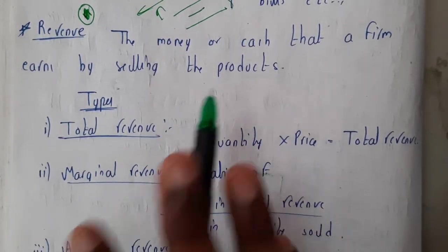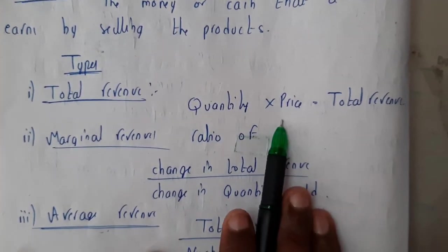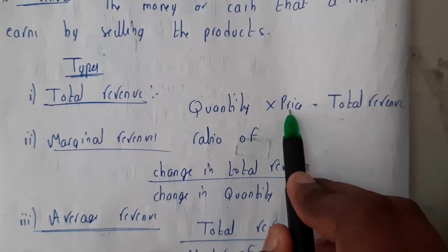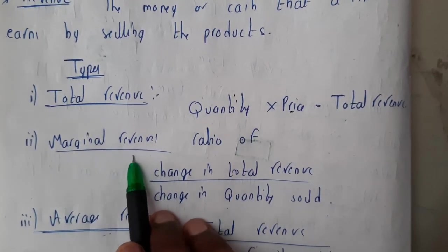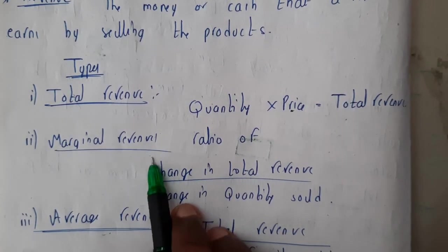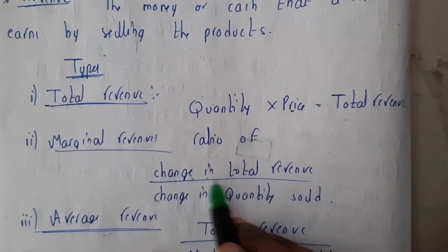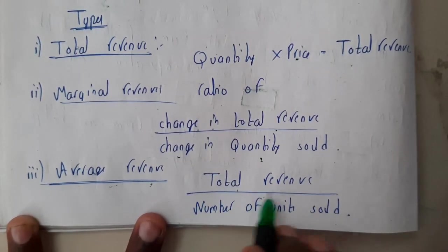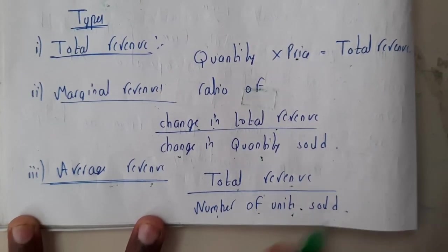Revenue is also of three types, just like cost. Total Revenue is quantity multiplied by price — for example, 50,000 units at 5 rupees each gives 50,000 × 5 as total revenue. Marginal Revenue is the change in revenue with respect to total units sold. Average Revenue is total revenue divided by the number of units sold.